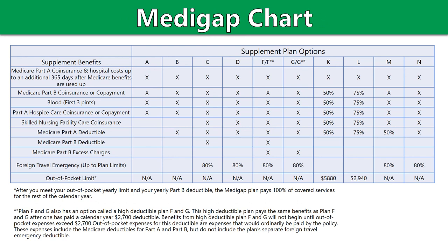This chart illustrates some of the plans offered — Plans A through N. For Plan G, everything is covered except the Part B deductible, but once that deductible is met, Medicare starts paying 100%.